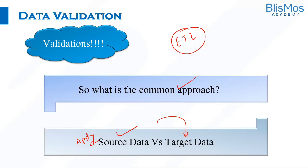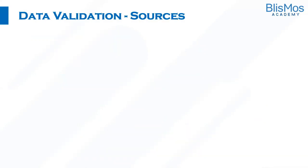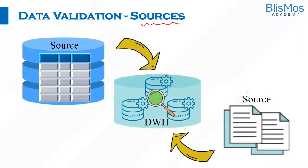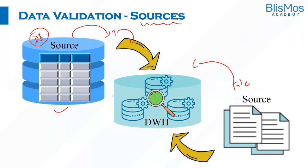When we talk about sources, we know data is extracted from different sources. Will we extract data from only one type of data source? Not really. We extract data from different types of sources — it can be a file, it can be a database. So when we extract data from different sources, will the validation approach be the same? Not really — the validation approach differs based on whether the source is a database or a file.